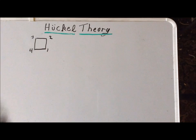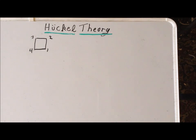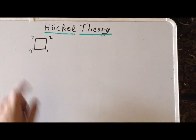Hello. In this video, we are going to derive the energies for the pi-conjugated system of cyclobutadiene using the simple Hückel theory. Since we've gone in great detail through all the steps for ethylene and for cyclopropenyl cation, in this video we're going to move through the elementary steps more quickly to look at some of the more complicated issues that arise in this particular system.